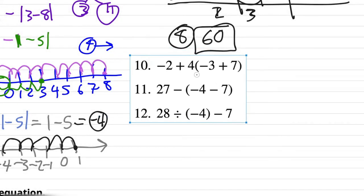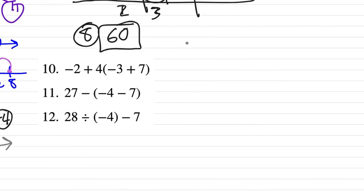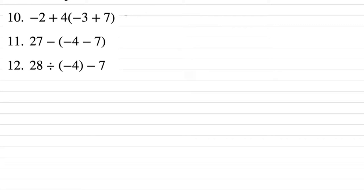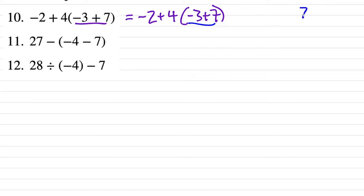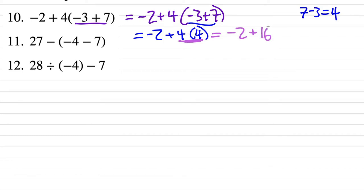Number 10: negative 2 plus 4 times the quantity (negative 3 plus 7). Using PEMDAS, parentheses first — the rest are spectators. For negative 3 plus 7, a helpful trick: do 7 minus 3 equals 4. So it's negative 2 plus 4 times 4. Multiplication takes precedence: 4 times 4 is 16. Then negative 2 plus 16 — rearranging: 16 plus negative 2 simplifies to 16 minus 2, which is 14.